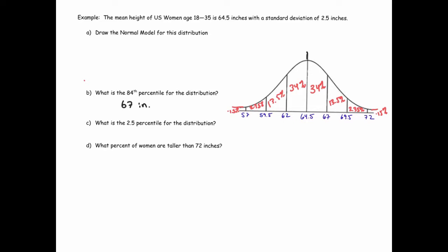Now, what is the 2.5 percentile for the distribution? Again, that's the data value below which 2.5% of the data lies. And you'll notice that 59.5 inches has exactly, if you sum these two sections up, exactly 2.5% below it. So 59.5 inches.